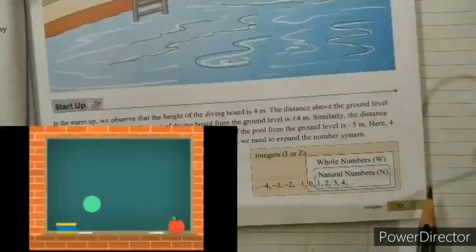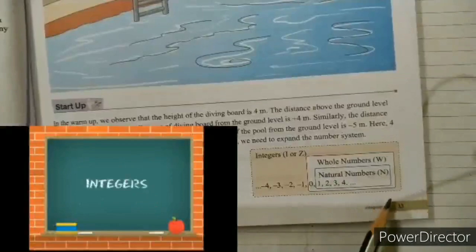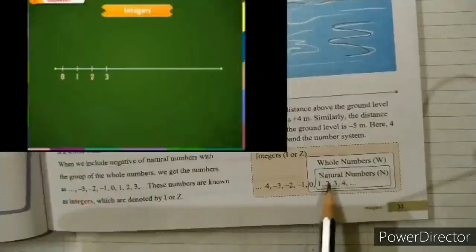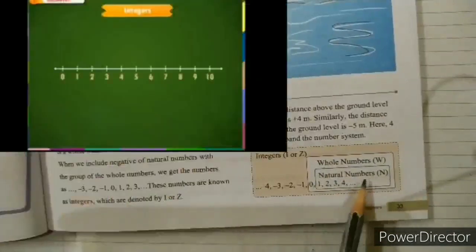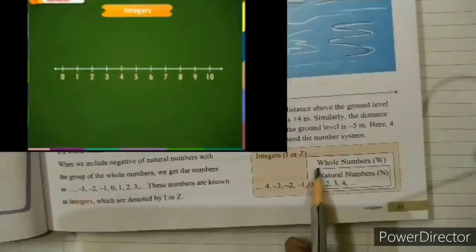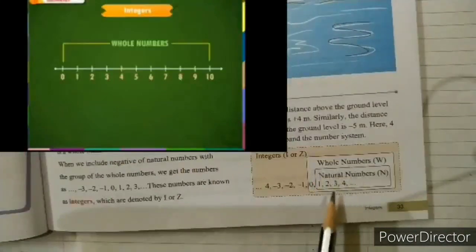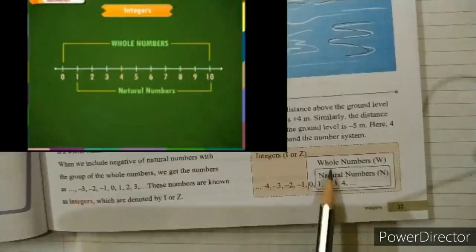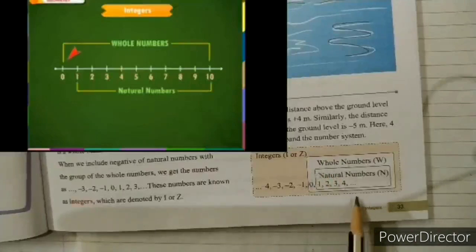In the last class we had already learned what are whole numbers and what are natural numbers. Whole numbers are when the set of natural numbers includes 0 — that is known as whole numbers.